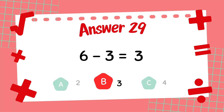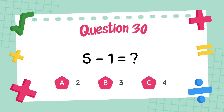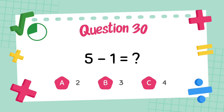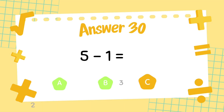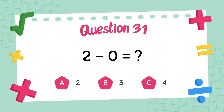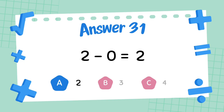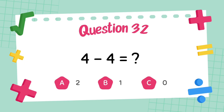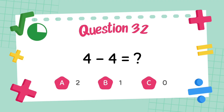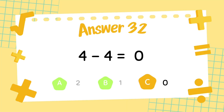What is 6 minus 3? The answer is 3. What is 7 minus 6? The answer is 1. What is 2 minus 0? The answer is 2. What is 4 minus 4? The answer is 0.